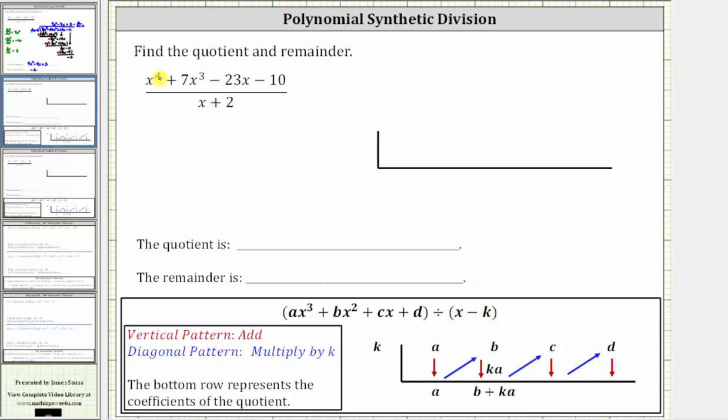So looking at our dividend, notice how we have a degree four dividend. We need the terms to be in descending order, and notice right now we don't have an x squared term, which means we need to include a zero x squared term.